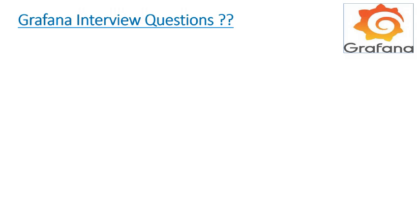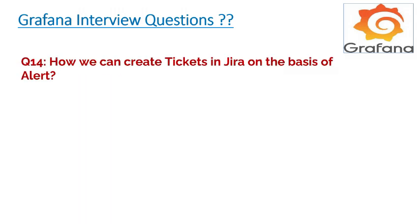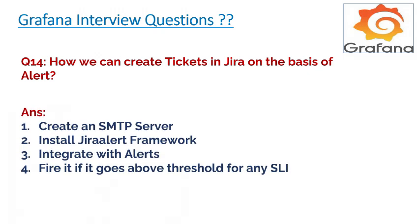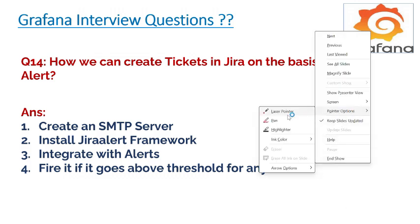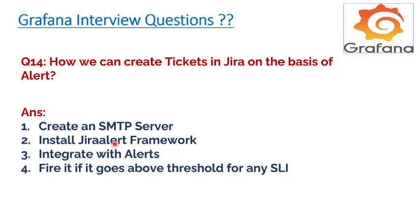Next question: how can we create tickets in Jira or ServiceNow based on alerts? Suppose you have an alert firing — for example, CPU is above 90% — and you want to not just send an email but also create a ticket directly. You should have an SMTP server set up, and you integrate the Grafana alert with the Jira alert framework. When it goes above the SLI threshold, a ticket will be created directly. I'll post documentation and a video on how to do this.